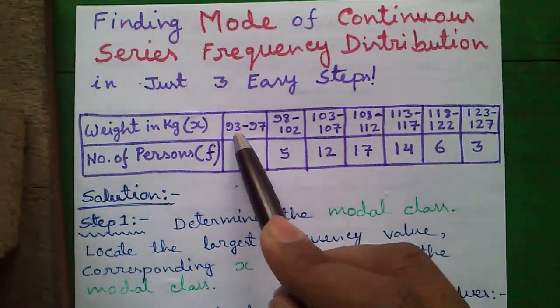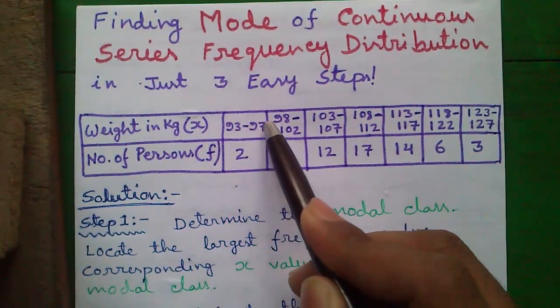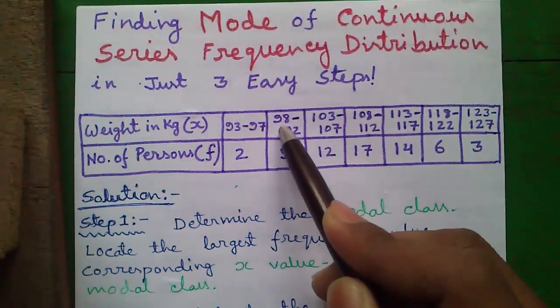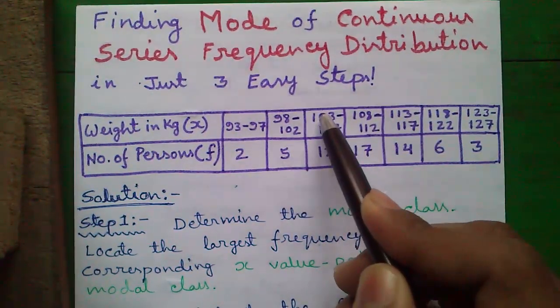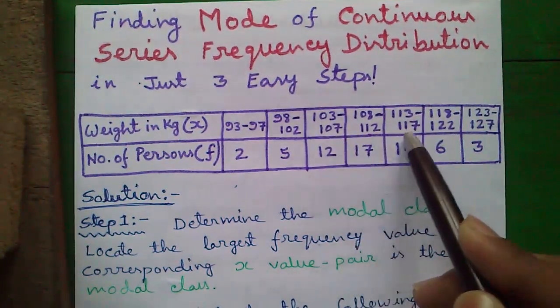This is a continuous series because the first interval ends at 97 while the second interval starts from the next value, 98. Similarly, the second interval ends at 102 and the third starts from the next value, 103. So this demonstrates the continuous series property.